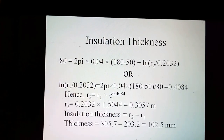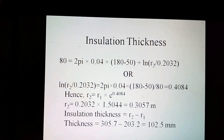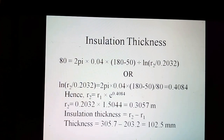Hence, insulation thickness = R2 − R1. The thickness is equal to 305.7 minus 203.2, which equals 102.5 millimetres.